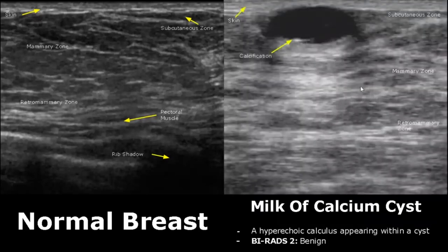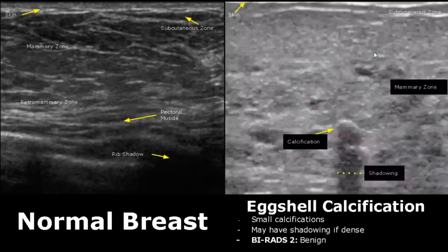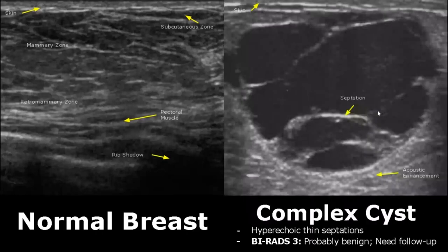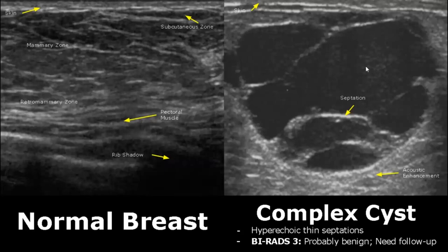A simple cyst containing a small hyperechoic calculus is usually a milk of calcium cyst. These cysts are also benign. Axial calcifications are small calcifications which may have shadowing if they are a bit dense; they have a BIRADS score of 2. Complex cysts are rated as BIRADS 3 because they need a follow-up exam. Usually thin hyperechoic septations are benign, but they still need a follow-up, which is why it is rated BIRADS 3.